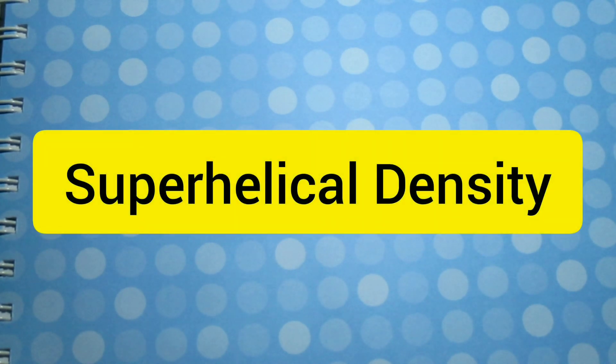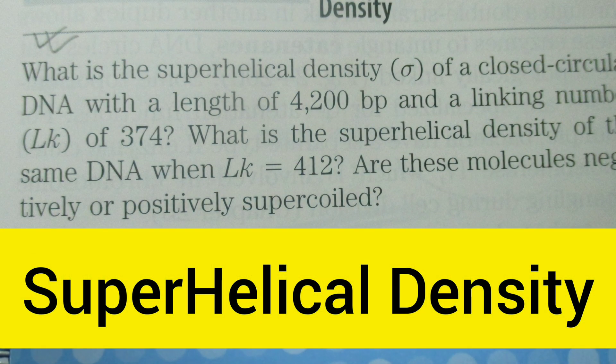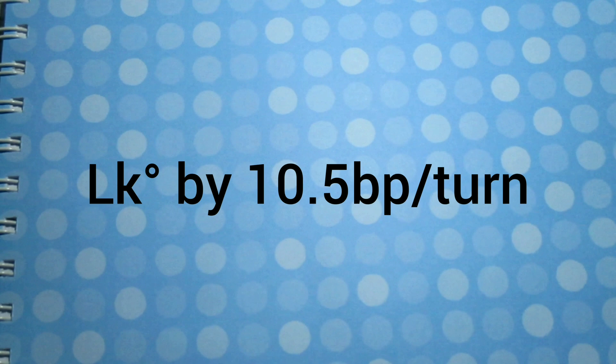This is the superhelical density, and the equation is based on this equation. There is a problem we need to solve, and then we will understand the topic more clearly. First, calculate the LK° by dividing the length of the closed circular DNA by 10.5 base pairs per turn.